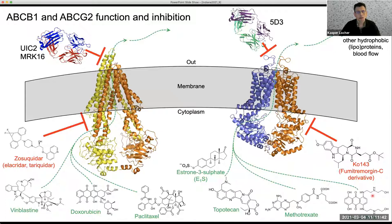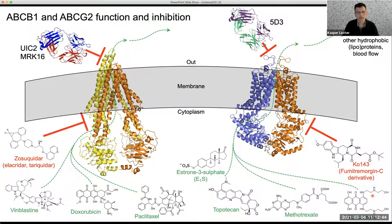My group is interested in understanding how ABCB1 and ABCG2 interact with their many substrates, and how chemically similar-looking molecules can be strong inhibitors rather than substrates. This has been a dream for a long time, and it would never have come to fruition without cryo-EM. Until a few years ago, we were doing everything we could to get x-ray structures of these molecules — we failed miserably, spending millions and many person-years. We've now sold or given away our last crystallization robot. All we do is cryo-EM, and this has really been a game changer.